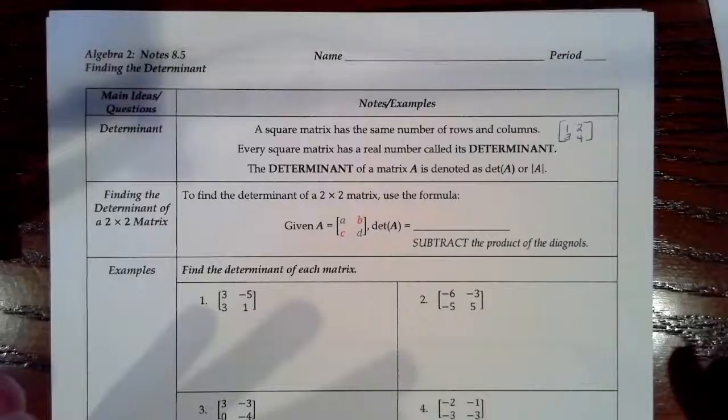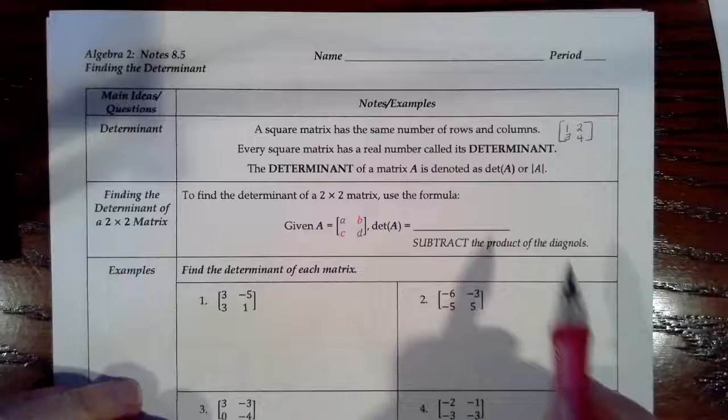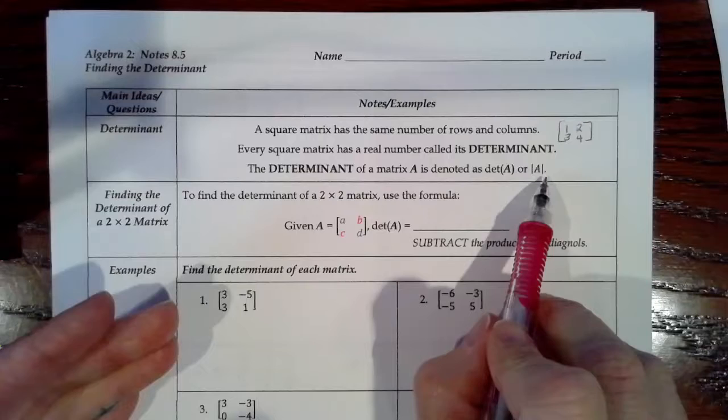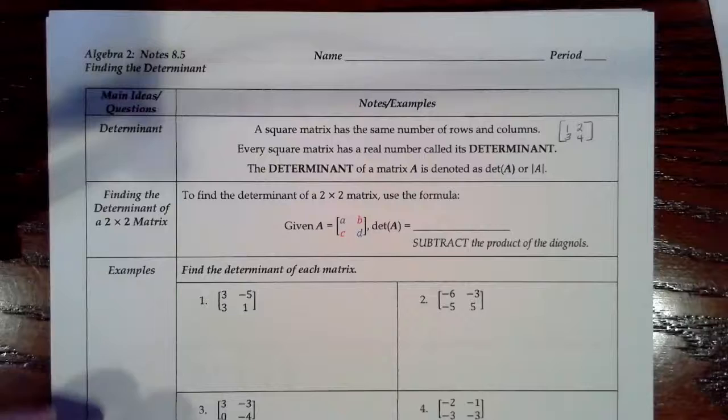Every square matrix has a real number called its determinant. The determinant of a matrix is usually written as det(A), where A is the name of the matrix. You can also write the letter of the matrix in absolute value symbols to symbolize the determinant. Either one works.